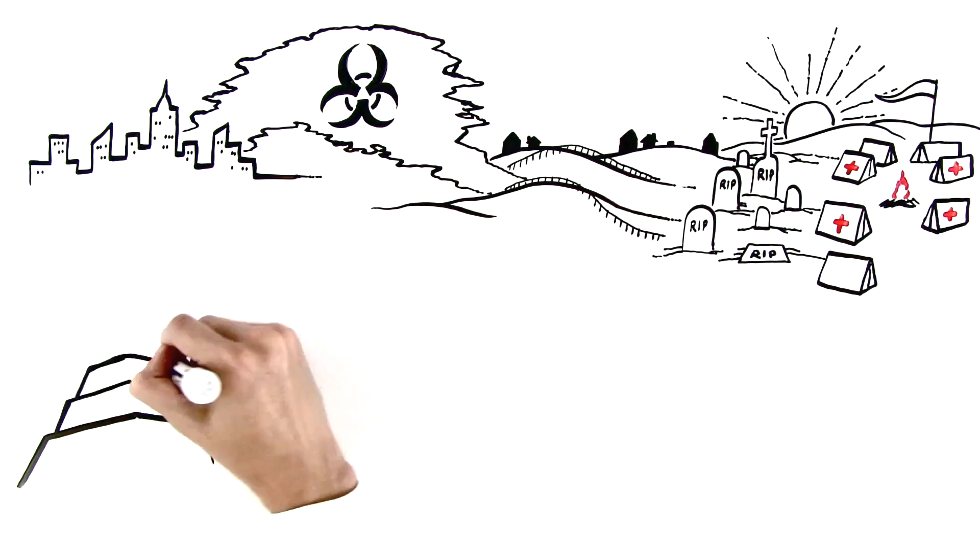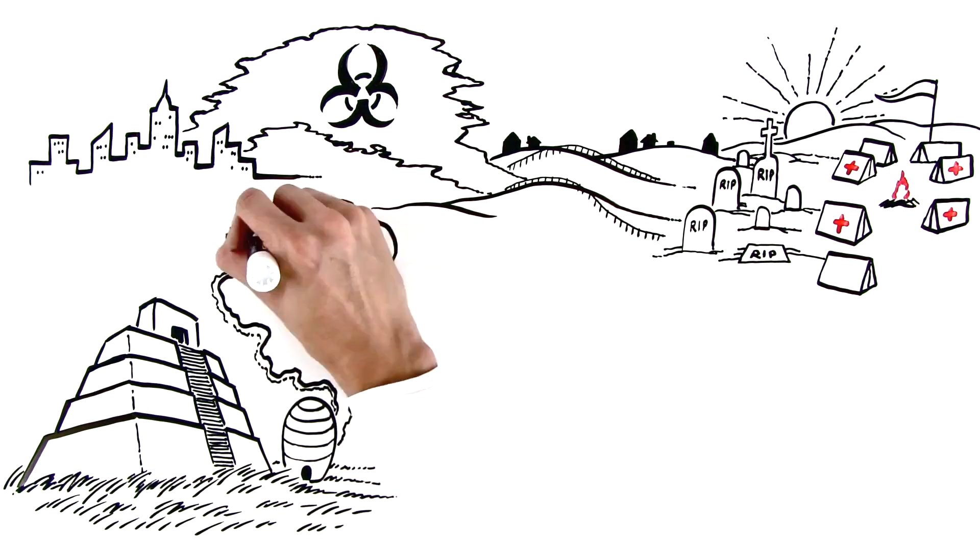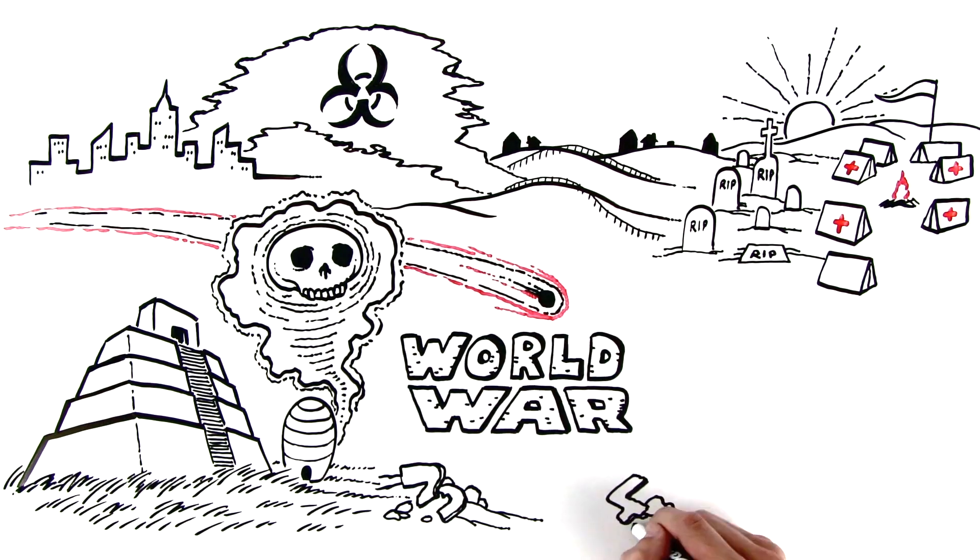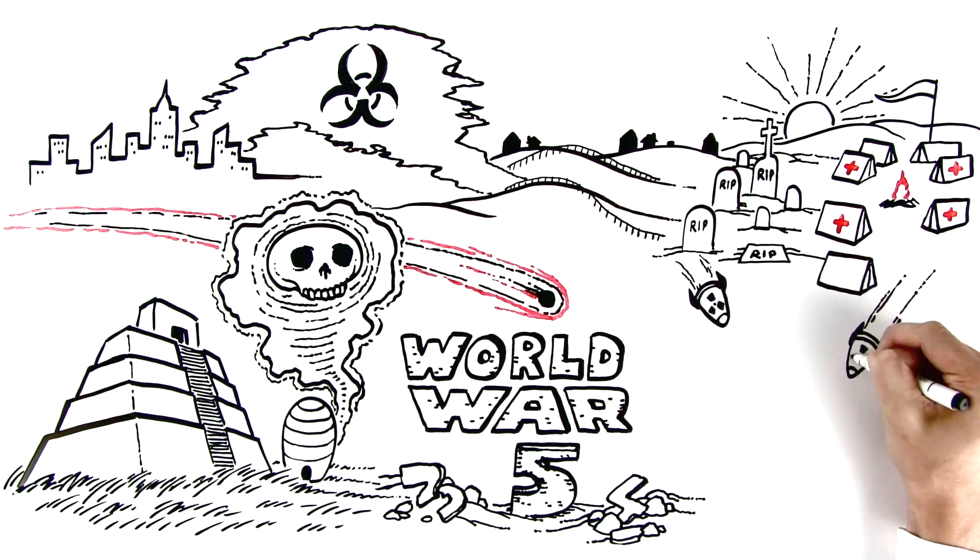I won't be surprised if the Aztecs are right and the bees go extinct and a meteor collides and we skip World War three and four and jump to five, bombs dropping from the sky.